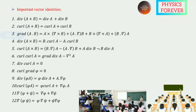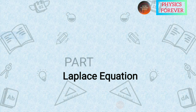Curl curl A equals zero. Curl and divergence of phi equals zero. Points 7 and 8 are most important and are repeated in critical questions. Divergence of (phi A) equals phi(divergence A) plus A dot del(phi). Curl of (phi A) equals phi(curl A) plus del(phi) cross A. Del(phi plus psi) equals del(phi) plus del(psi). Del(phi · psi) equals phi·del(psi) plus psi·del(phi).